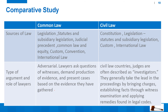The last point in our comparative discussion is types of argument and the role of lawyers. Common law legal system is adversarial: lawyers ask questions, demand production of evidence, and present cases based on the evidence they gathered. In civil law countries, judges are often described as investigators — they generally take the lead in proceedings by bringing charges, establishing facts through witness examination, and supplying remedies found in the legal code. So in common law countries, the role of lawyers is much more prominent, while in civil law countries, judges play the dominant role in litigation.